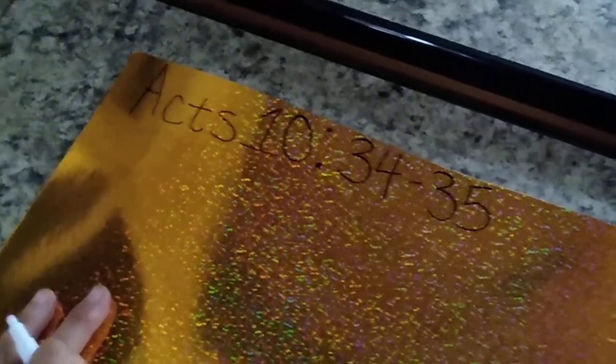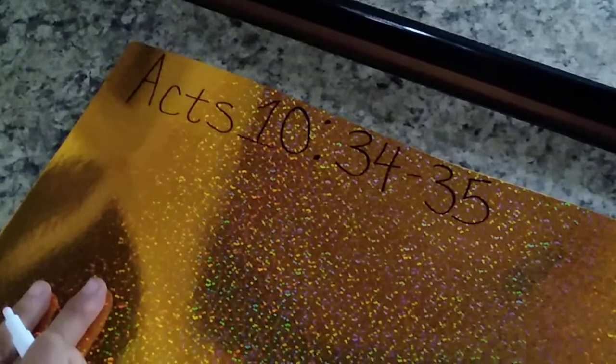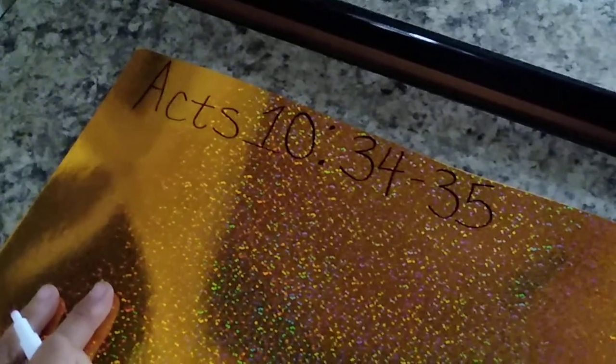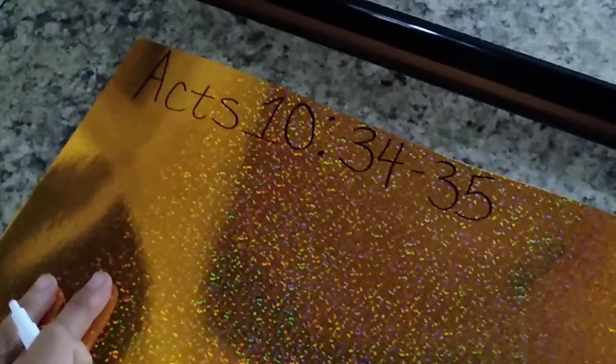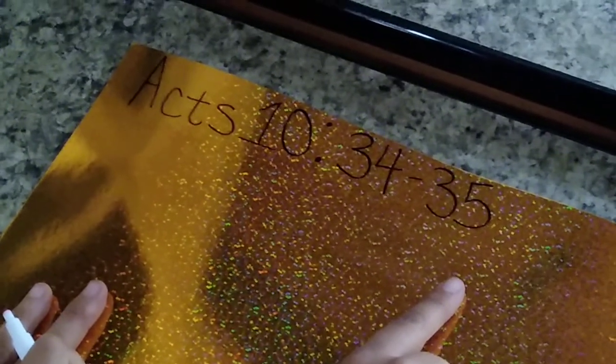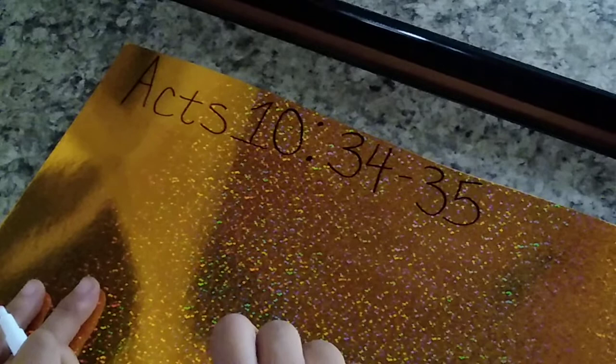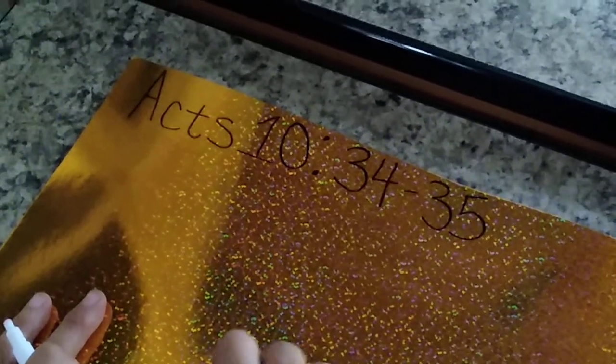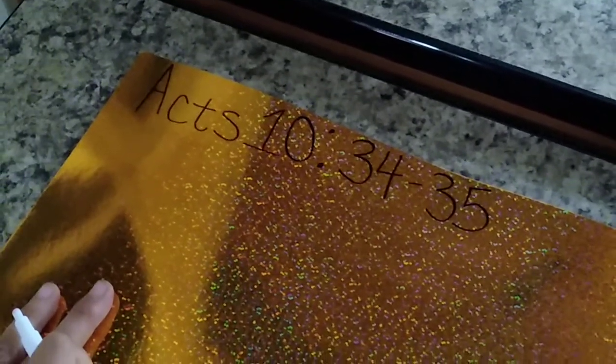The surface on here is kind of smooth and silky. Once I got started, I realized that I had made a blunder. You can't really read the words real well. It's supposed to say Acts 10:34 to 35 and upon realizing that I couldn't see it real well...